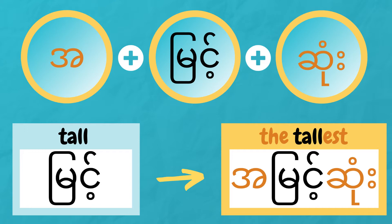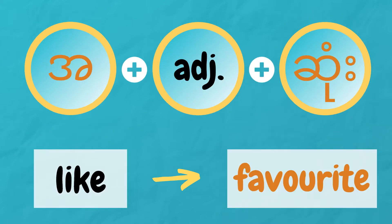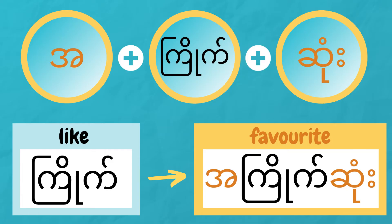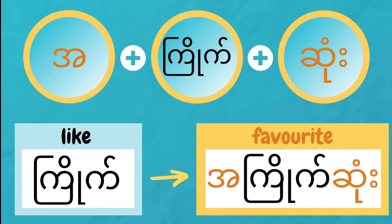Not so painful, right? Let's try one more. Let's say we want to say favourite. Do you remember the word for like? That's right, 'jai'. We add the 'a' in front of 'jai' and the 'zong' after it and we get 'a jai zong' — favourite, or in other words, the one liked the most. Can you say that? A jai zong. Brilliant, so let's get into our practice.